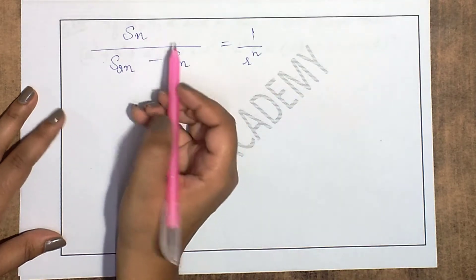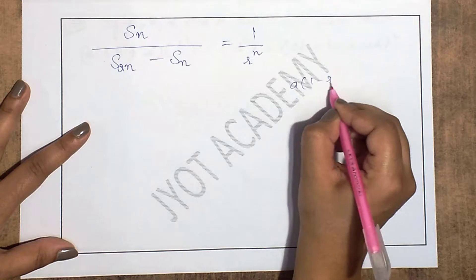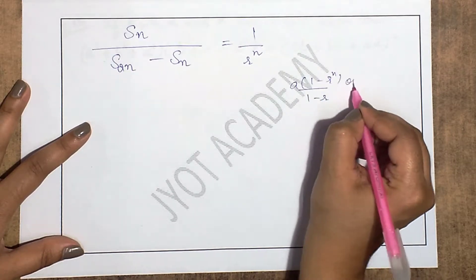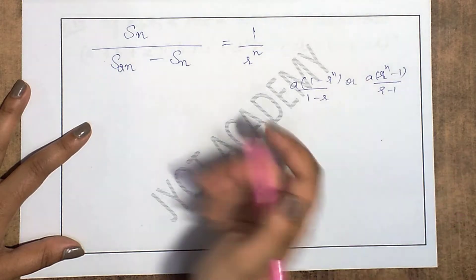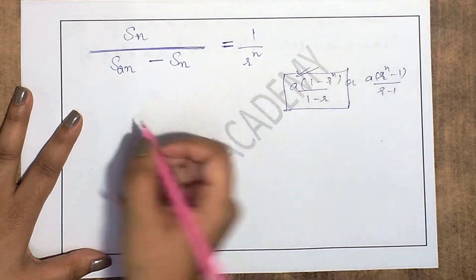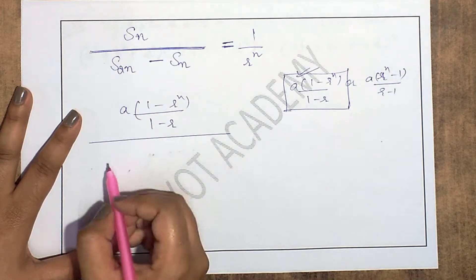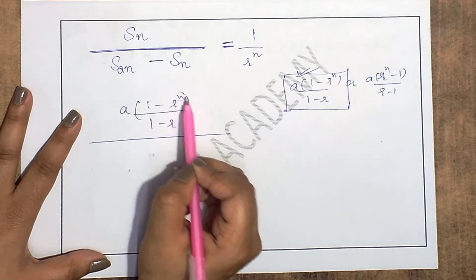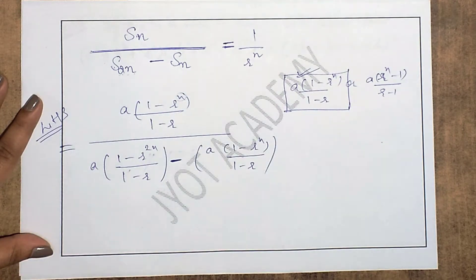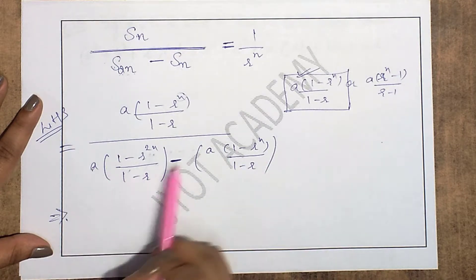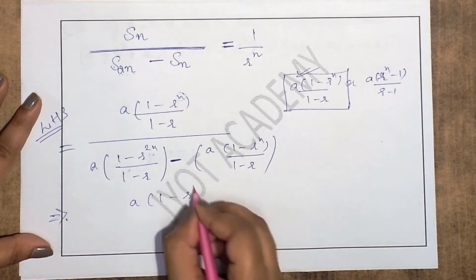Apply the sum formula S_n = a(1 − r^n)/(1 − r). For S_(2n), replace n with 2n, giving S_(2n) = a(1 − r^(2n))/(1 − r). Now simplify the left-hand side of our ratio. The denominator has a and (1−r) as common factors.